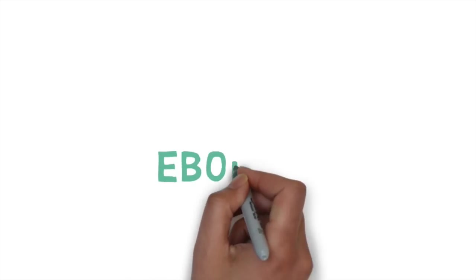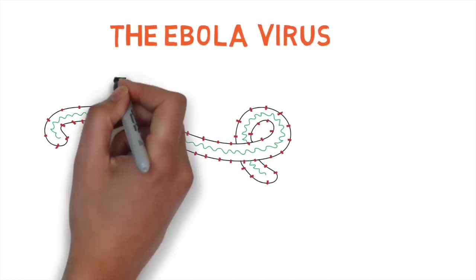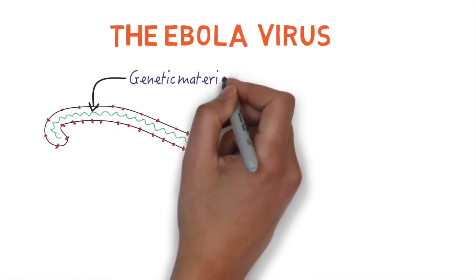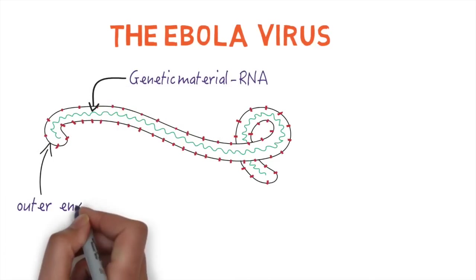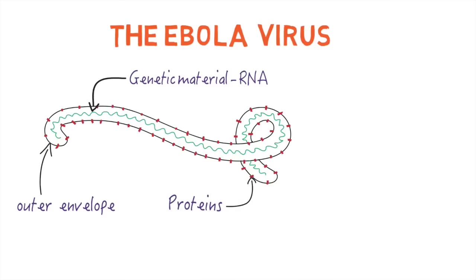Ebola is a serious viral disease with a very high death rate. The disease is caused by a virus called the Ebola virus. The virus looks a bit like a long thread and is made of an inner core of genetic material with an envelope around it. It also has little proteins on the surface that help it attach and enter into cells.